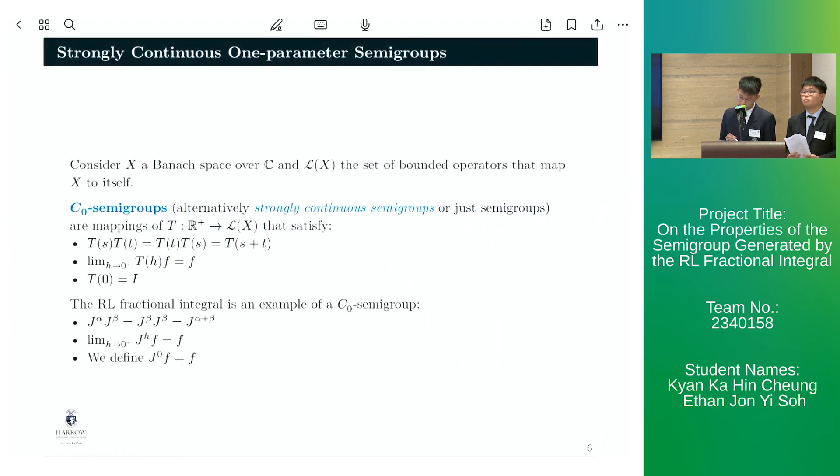C-zero semigroups, also known as strongly continuous semigroups or just semigroups in general, are mappings from the positive reals to the set of bounded operators that map from an arbitrary Banach space X to itself. And they satisfy the following conditions.